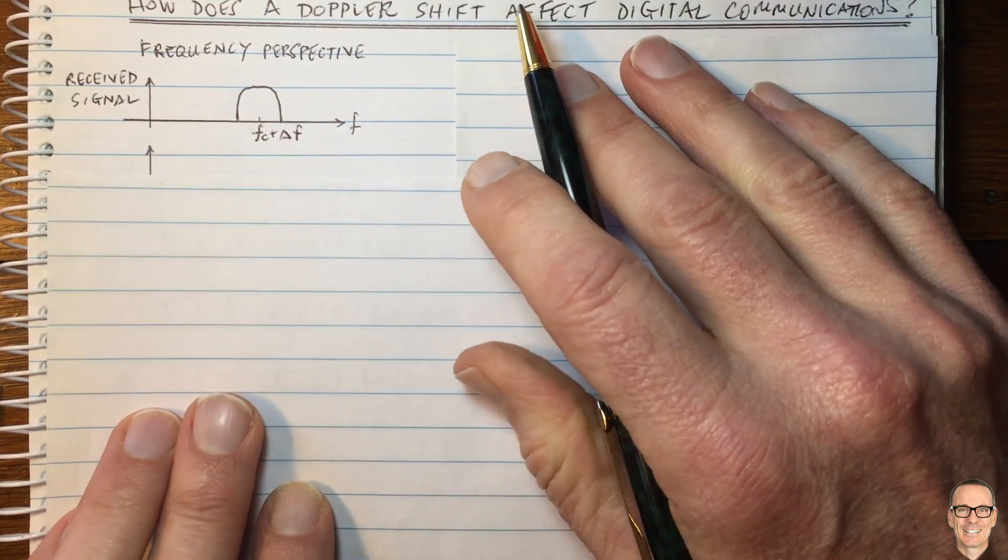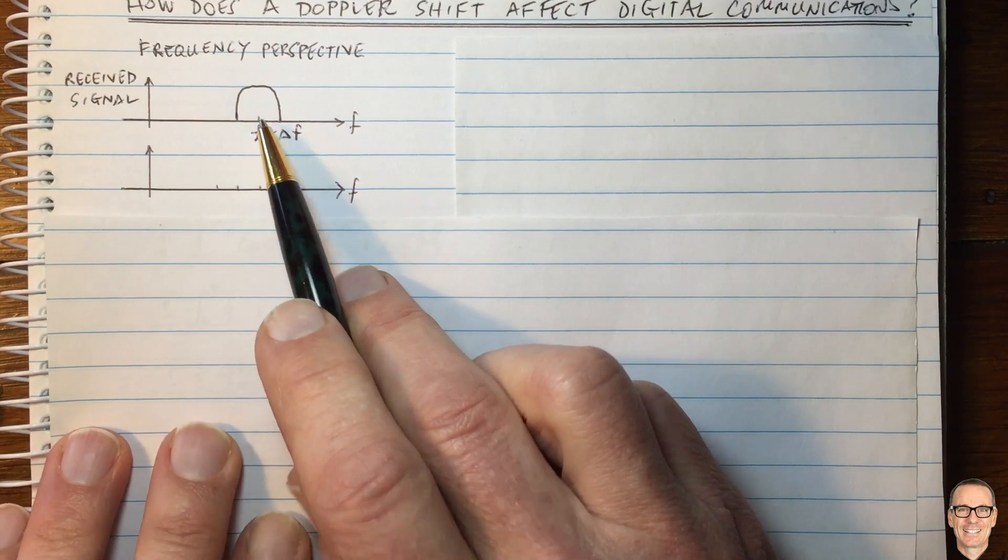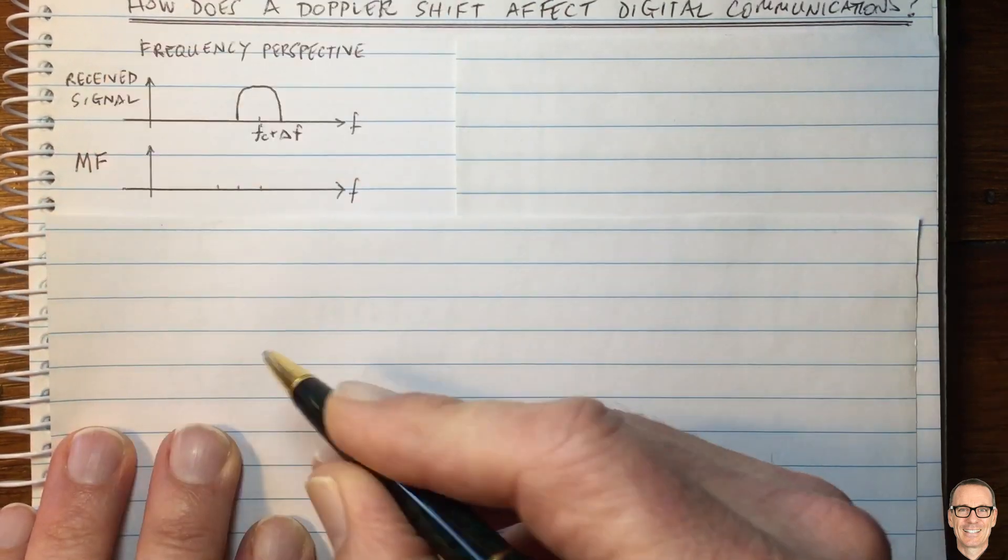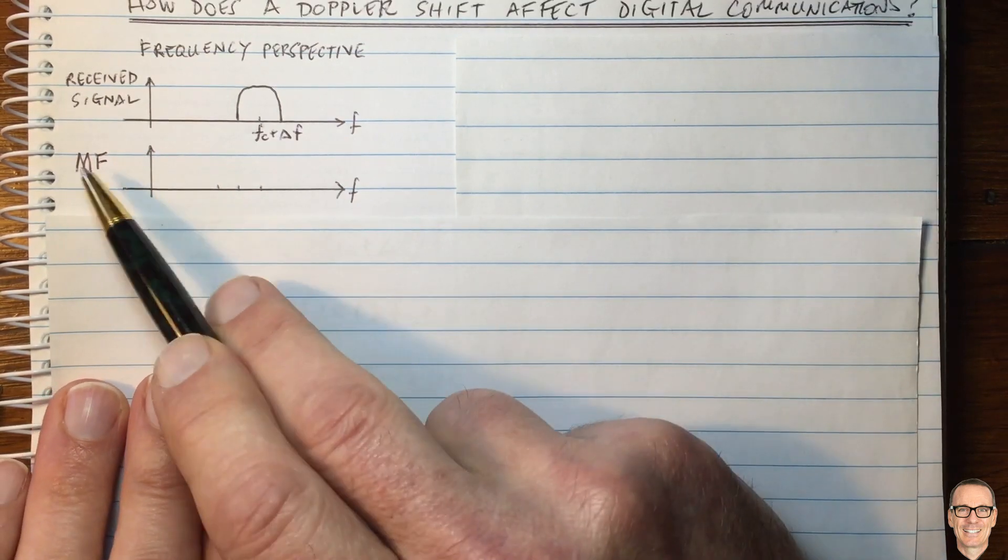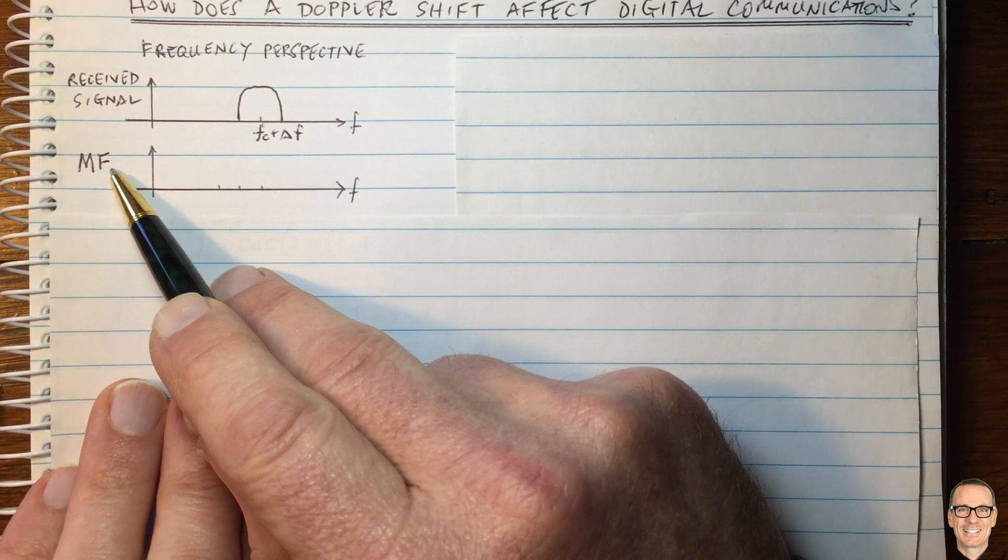Now, in the receiver, the first thing that happens is that the signal is match filtered. And for more information on this, check out the description below. You'll find a link to a video about matched filtering. And this filter is matched to the transmitted signal.